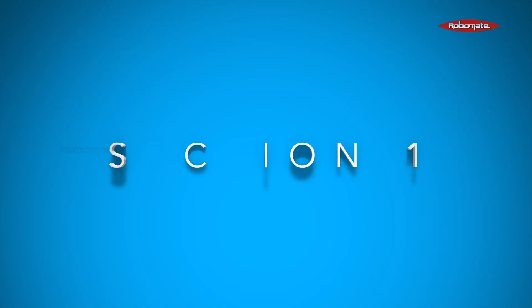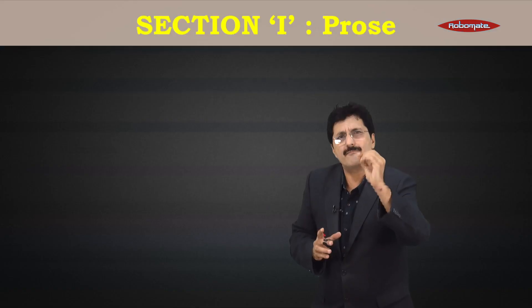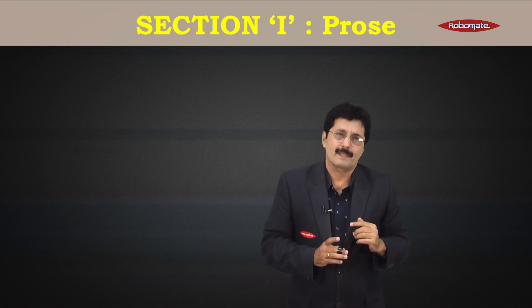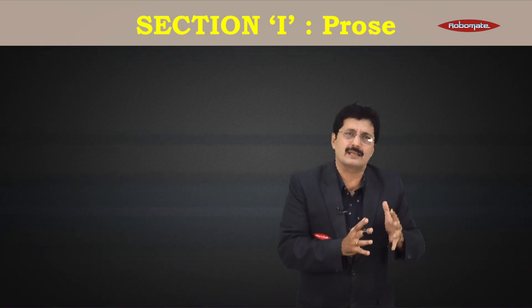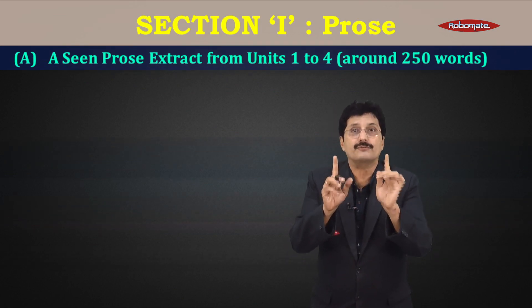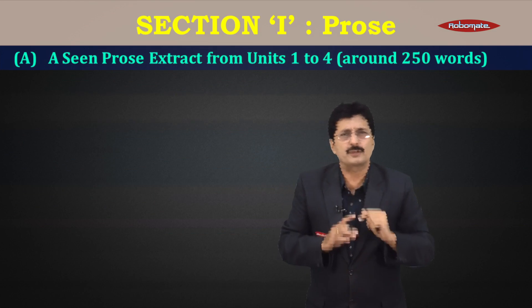Now what are we going to do here in this module? I'll cover up section number one, that is 45 marks for prose, both seen and unseen. Let's go into the details. Question number one A: it's a seen prose extract from units one to four, around 250 words for 12 marks.